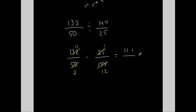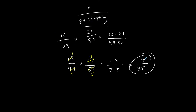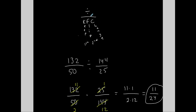I check again: 11, 1, 2, and 12 — nothing on top can be divided by the same thing as anything on the bottom. So I multiply straight across the top: 11 times 1, and straight across the bottom. Eleven over twenty-four is my final quotient, which is the result of dividing those two fractions. Quick reminder: addition and subtraction need a common denominator; multiplication — pre-simplify then multiply across; division — KFC, keep the first, flip the second, change to multiplication, then pre-simplify and multiply across. Good luck!